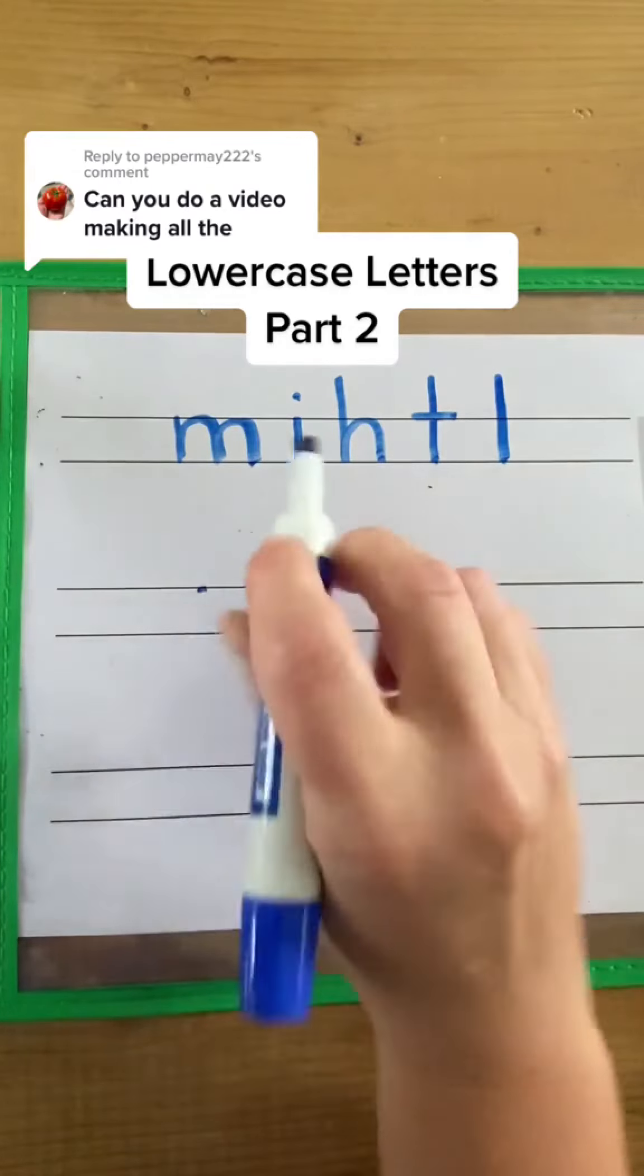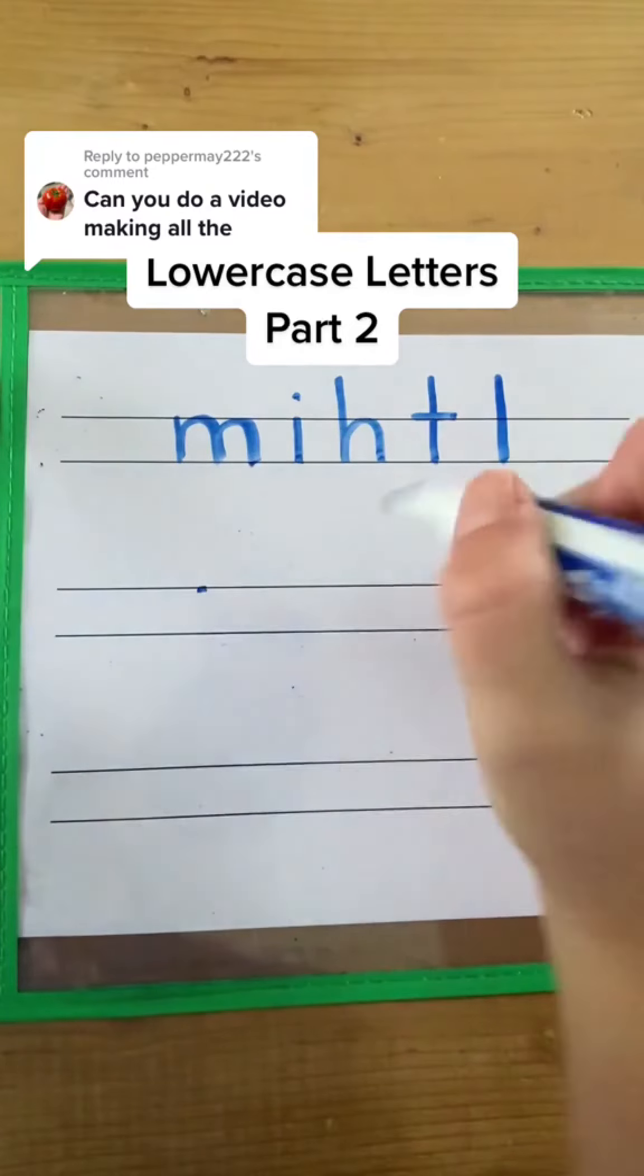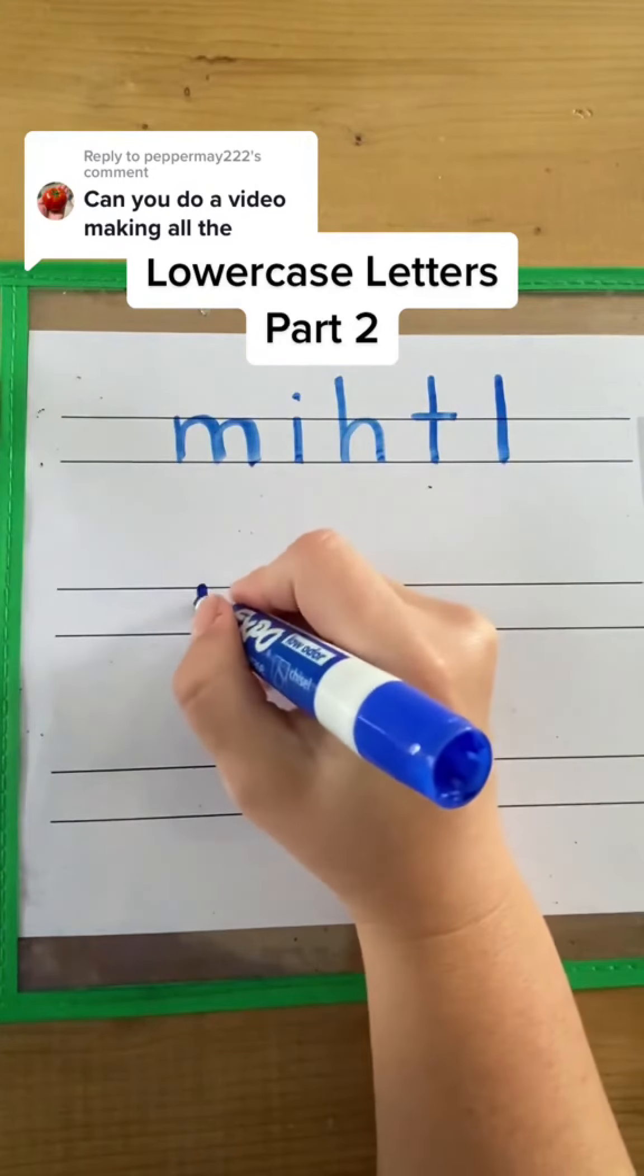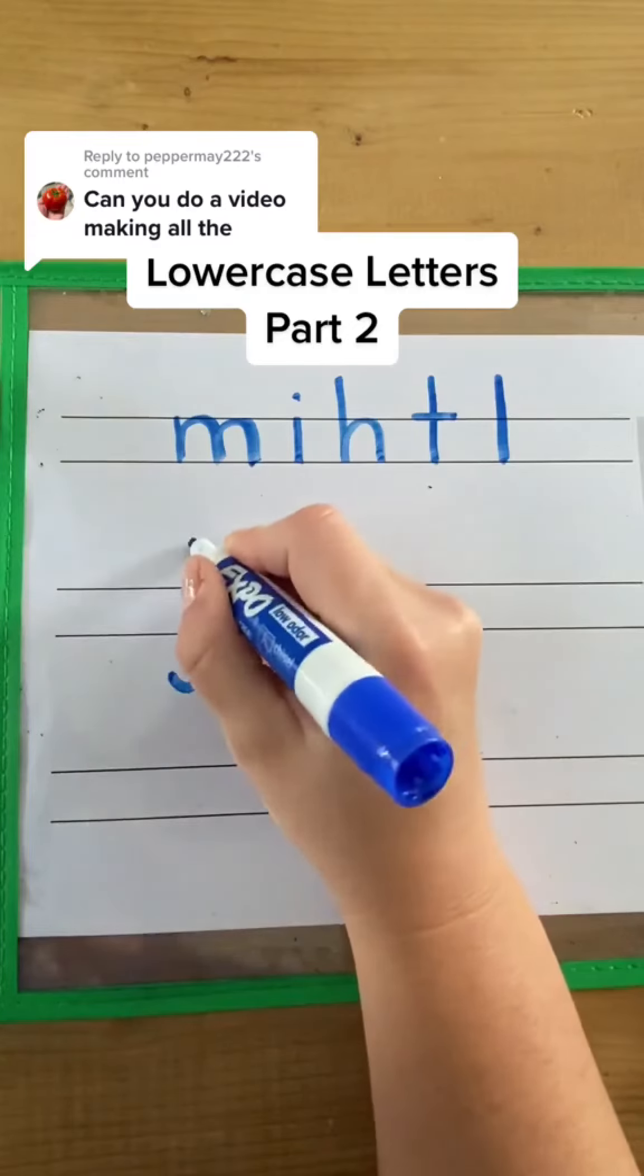And the lowercase J is a low letter. So we're going to make a big line down and a little curve, frog jump, and dot.